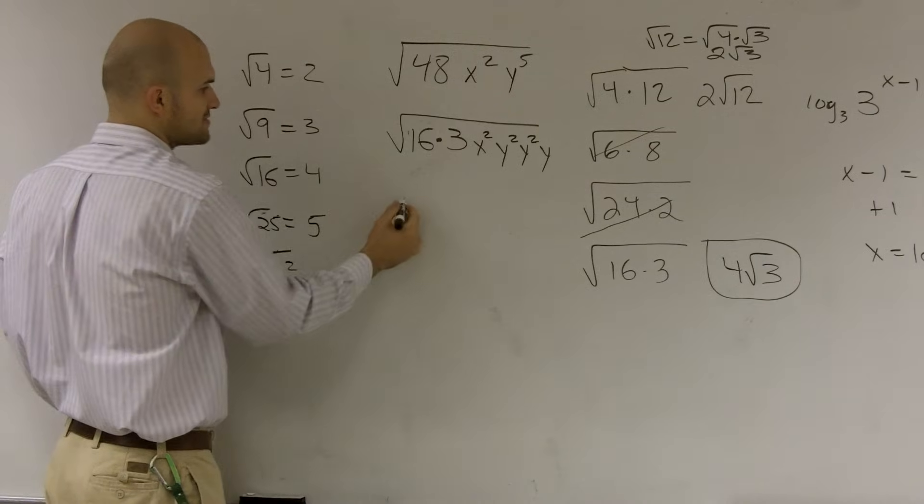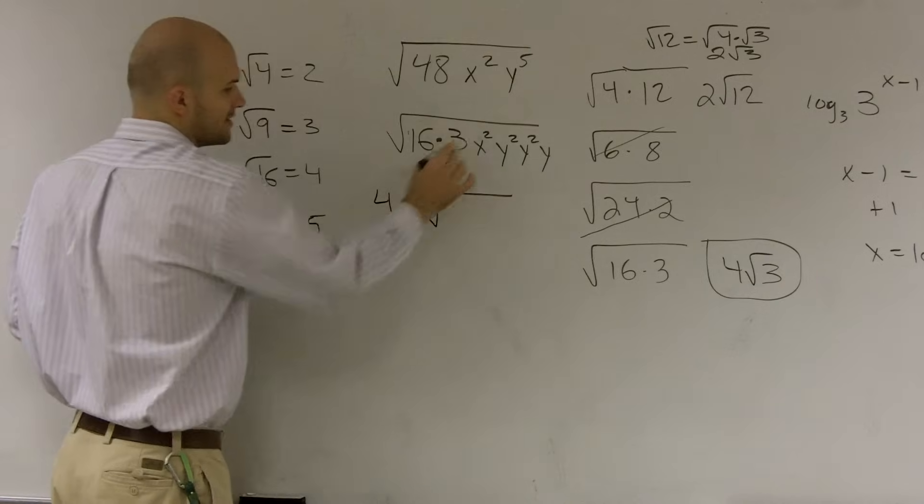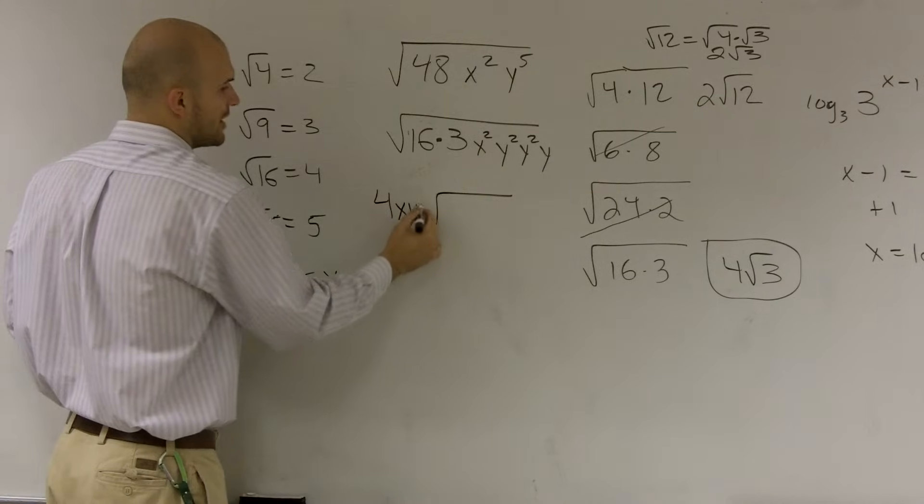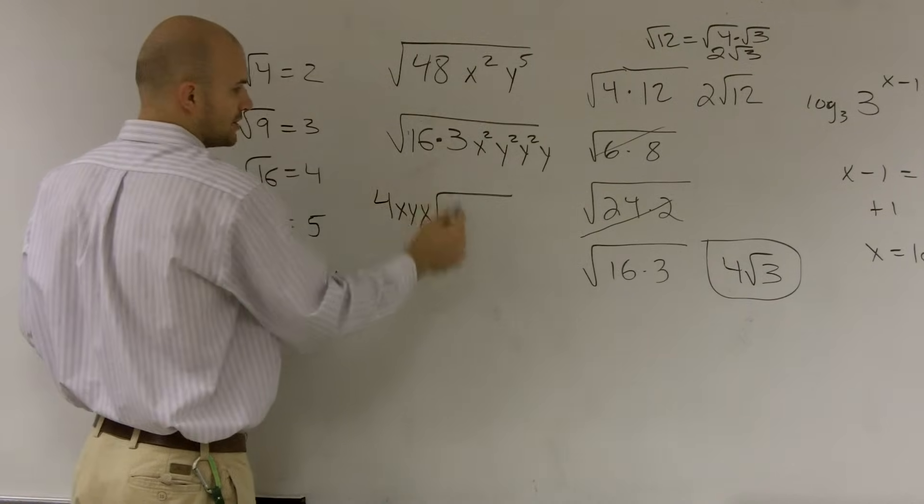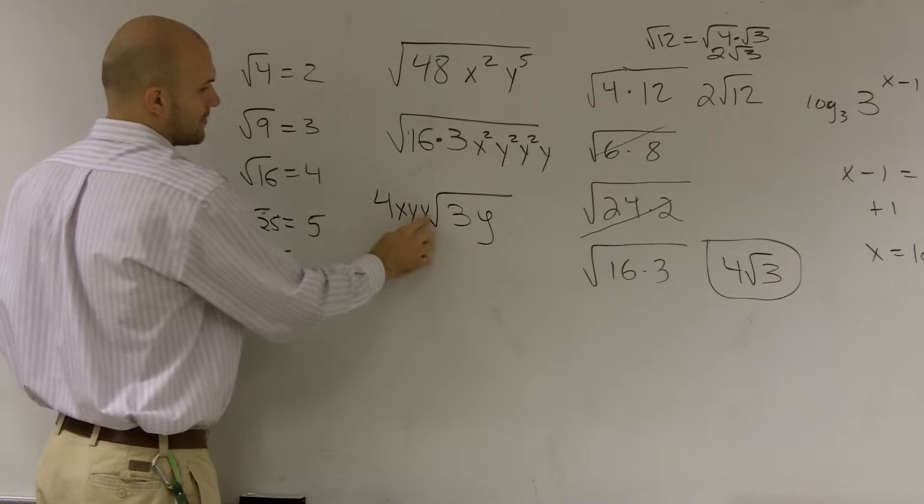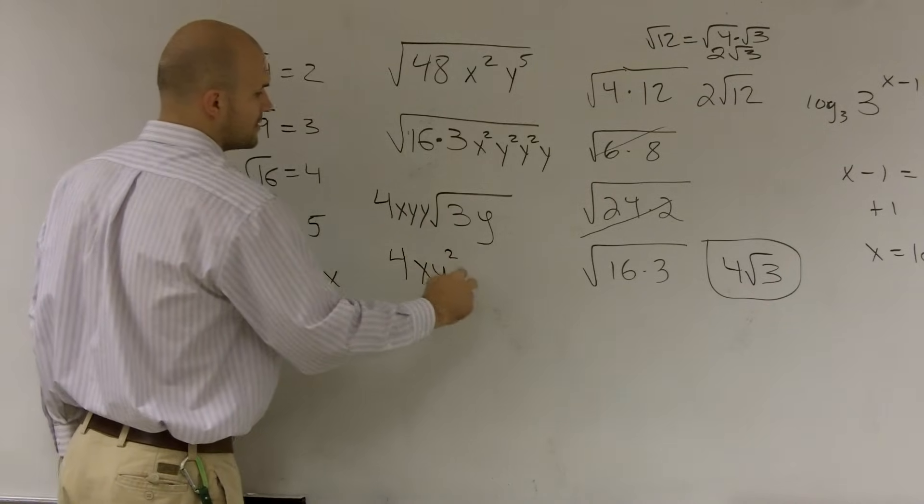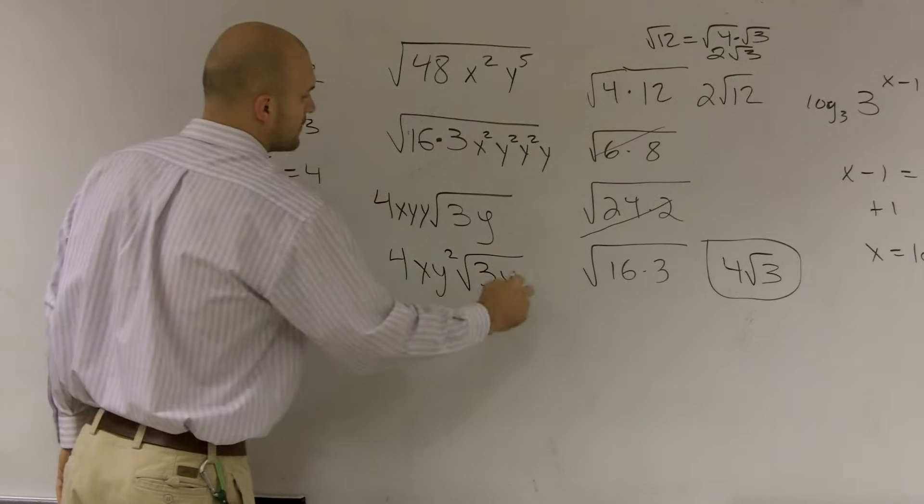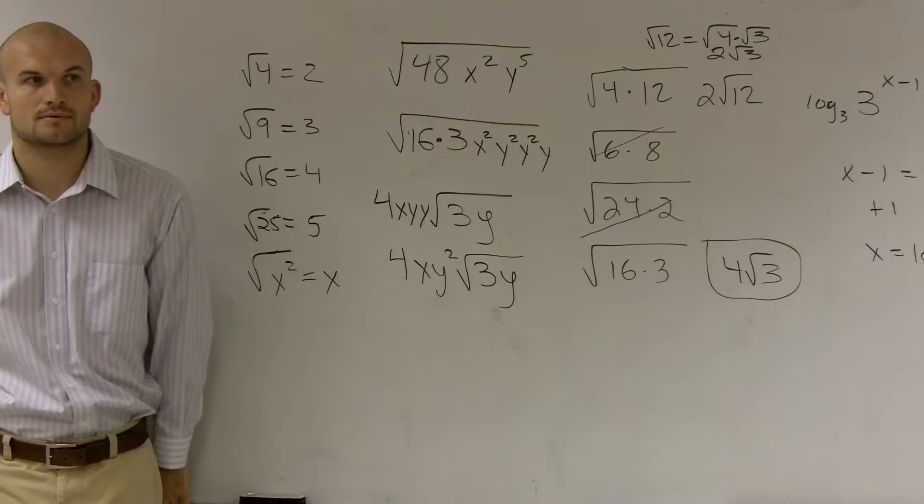Well, the square root of 16 is obviously 4. This becomes x times y times y, because those both cancel out to give you your single variable. So you're left with 3y. So your final answer is 4xy squared times square root of 3y. Questions on this?